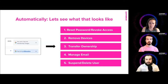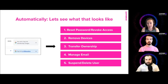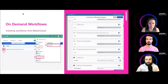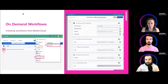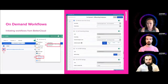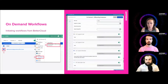Here's an example of what that automatic workflow looks like. We have a workflow that recognizes once a user has been added to the offboarding OU and takes automated steps: resetting the password, revoking access, removing their devices, transferring calendars, files, and sites, managing their email, making sure there's no email forwarding, and then suspending and deleting that user. We can show where the user is listed and select an action to run a workflow, list out each of those actions, maybe toggle some off for a specific case, and ultimately run that workflow on demand.